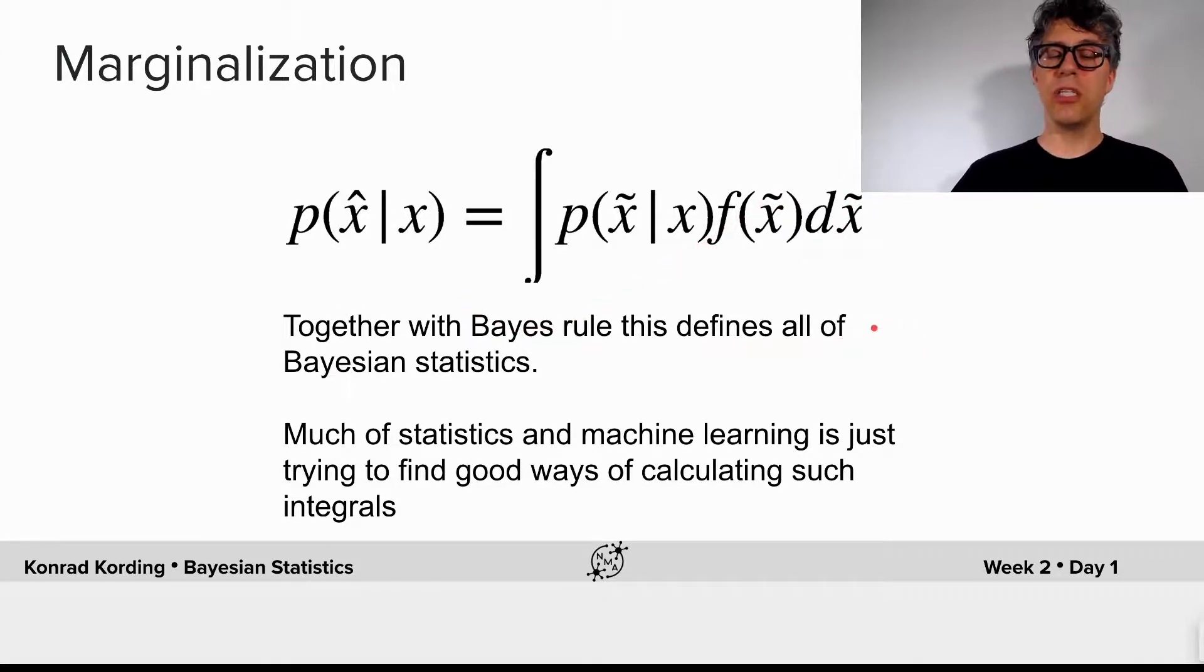This rule here, marginalization together with Bayes' rule, defines all that we need in Bayesian statistics, and much of statistics and machine learning is just trying to find good ways of calculating such integrals.